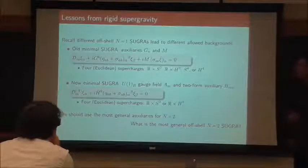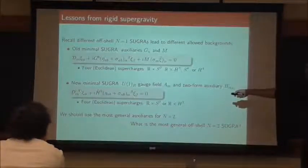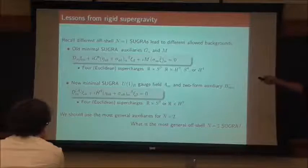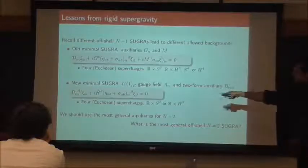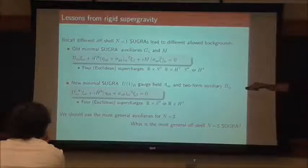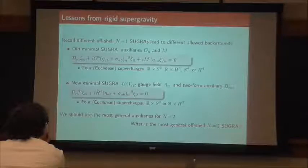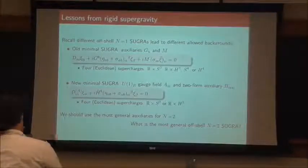For new minimal supergravity, you have a different auxiliary field structure. You have a U(1) R gauge field which gets shoved into the covariant derivative, and instead of M, you have a two-form auxiliary with a three-form field strength whose dual one-form appears. When you solve this equation for four supercharges, you only get half the possibilities — you don't find S⁴ or H⁴. All I'm trying to get across here is just to reinforce the idea that the choice of auxiliary fields really matters — it affects the structure of the solutions.